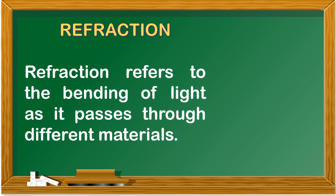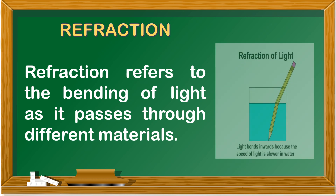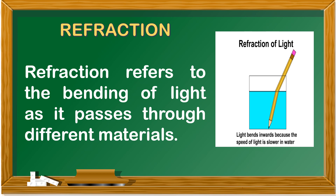Refraction refers to the bending of light as it passes through different materials. For example, the straw in a glass of water appears bent because of the different materials that interact with light. The part of the straw not dipped in water interacts with air, while the part dipped in water interacts with water. Light moves faster in air than in water — this is why the straw looks bent.